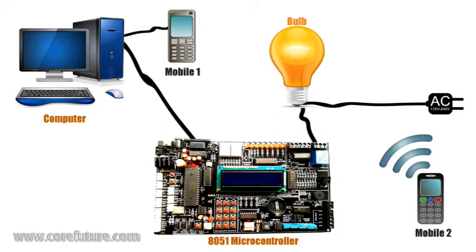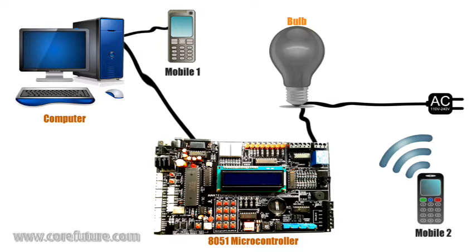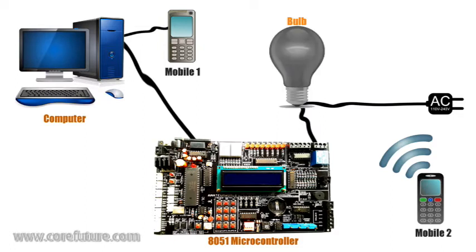So, this is our setup. We have connected the embedded hardware to the computer. Mobile 1 is connected to the computer through a data cable. The computer screen shows the software interface. In my hand is Mobile 2, by which we can control the light bulb. In our embedded hardware circuit, we have connected a relay to an 8051 microcontroller, and this light bulb is connected to the microcontroller through this relay.